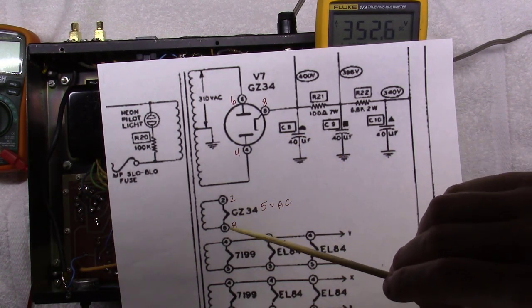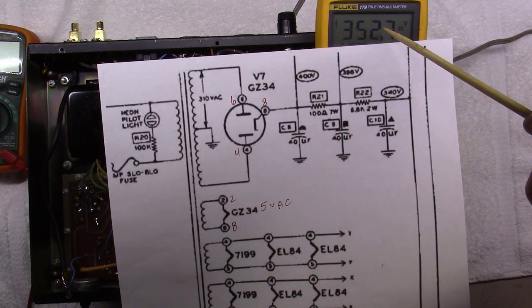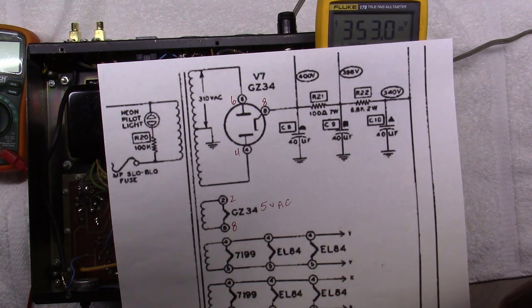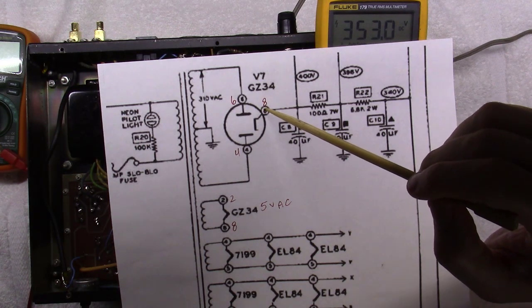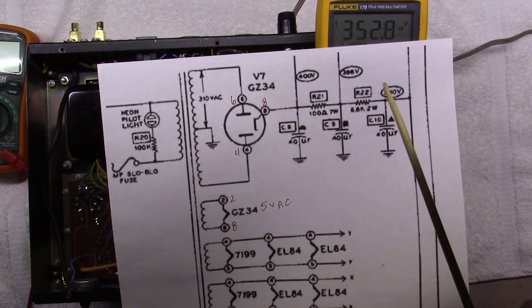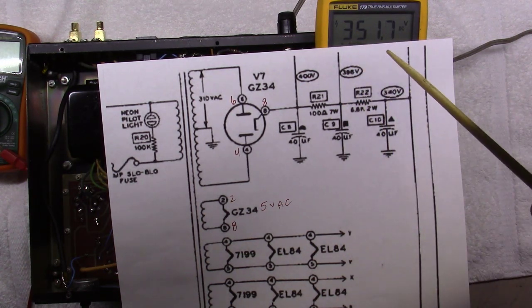But the fact that the other side of the filament here, pin two, is sitting at 350 some volts, it's at the same DC potential. So there's zero, when you're at the same DC potential on one side of the filament as you are on the other side of it, there is zero voltage drop across that filament, thus it doesn't fry.